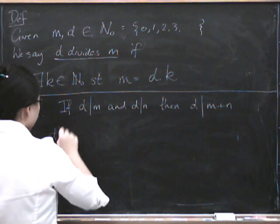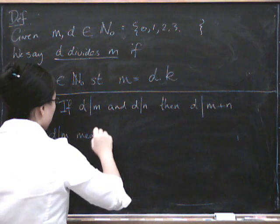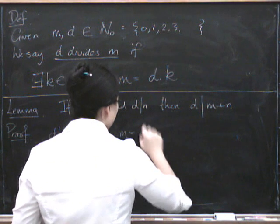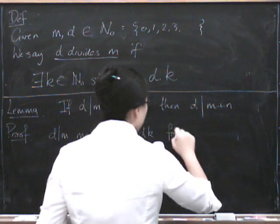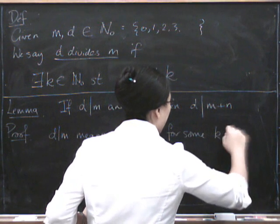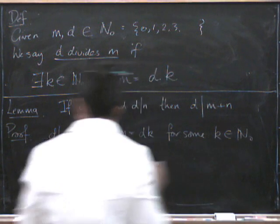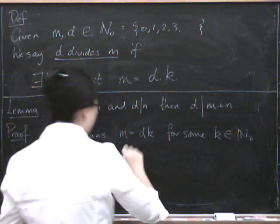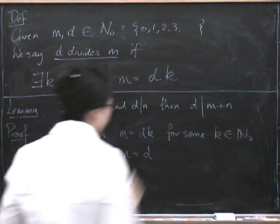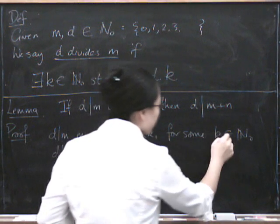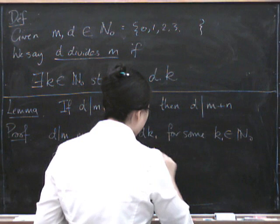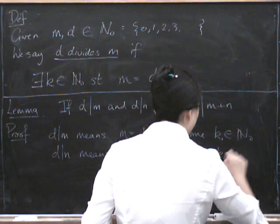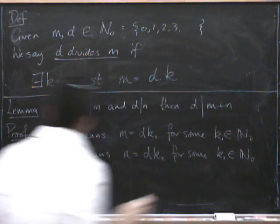So D divides M means, well, it means this, right? It means that M equals DK for some K in the natural numbers. So let's call this one K1 and let's call this one K2 for some K2 in the natural numbers.